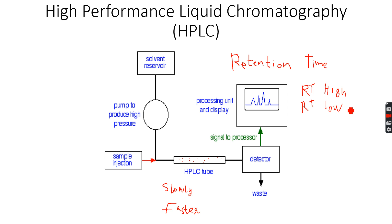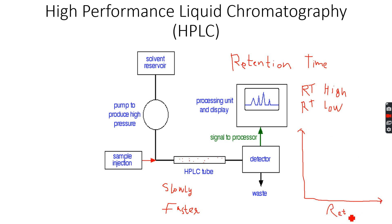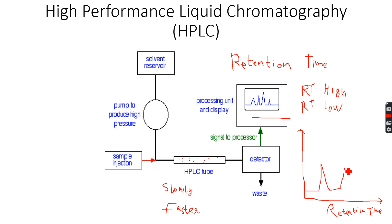So the rule is: the lower the retention time, the more polar the substance; the higher the retention time, the more non-polar the substance. We get a graph where the x-axis is the retention time and we get triangular peaks, as you can see on the display unit.